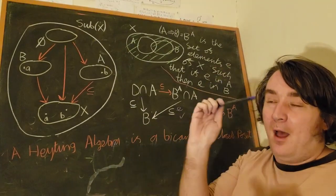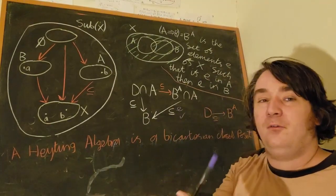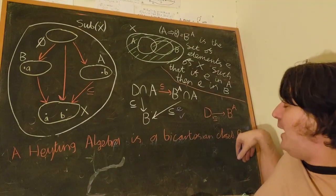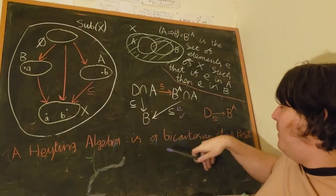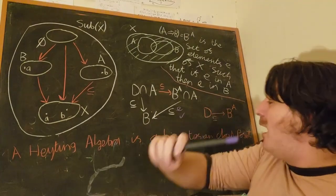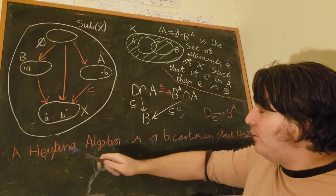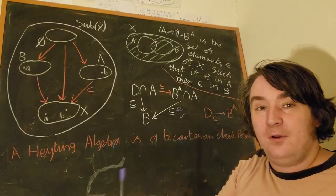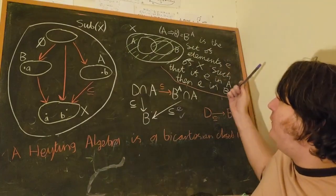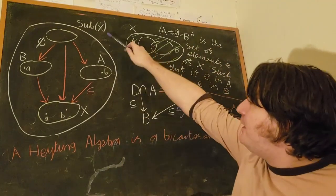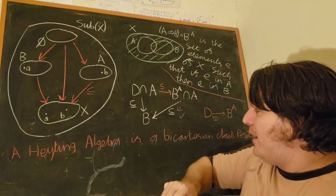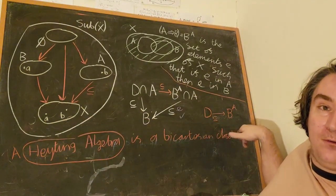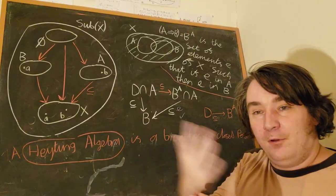We have terminal objects, initial objects, products, co-products, and exponential objects. What we have here is a Bicartesian closed category — not just any category, but a Bicartesian closed poset. There's a special name for categories like that: they're called Heyting algebras, and they are intimately related to logic. We've already seen how closely related Sub(X) is to logic. Heyting algebras are more general than just these posets of subsets.